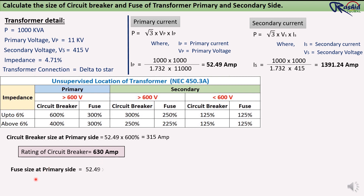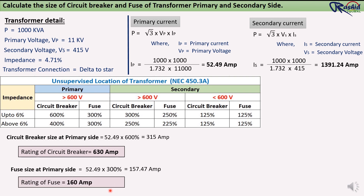For fuse size calculation, we multiply 300% by the primary current: 52.49 × 300% = 157.47 ampere. Since a 157 ampere fuse is not available in the market, we use a 160 ampere fuse, which is available. So we select the 160 ampere fuse.